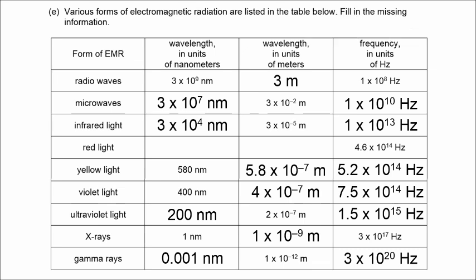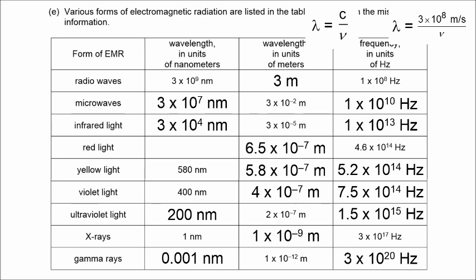For the last bit, we have to go from frequency to wavelength. We'll still use the speed of light, but dividing by the frequency gives us 6.5 times 10 to the negative 7 meters — that's the wavelength of red light, equivalent to 650 nanometers. You'll notice that as you go from top to bottom in this chart, wavelengths are decreasing but frequency is increasing, so there's an inverse relationship between wavelength and frequency.